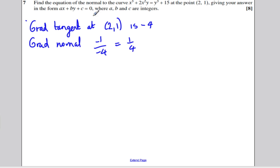And now we can just substitute in to the equation of a line. y minus y₁ is m(x minus x₁) with our x₁ and y₁, 2, 1. So we would write y minus 1 is equal to a quarter (x minus 2).